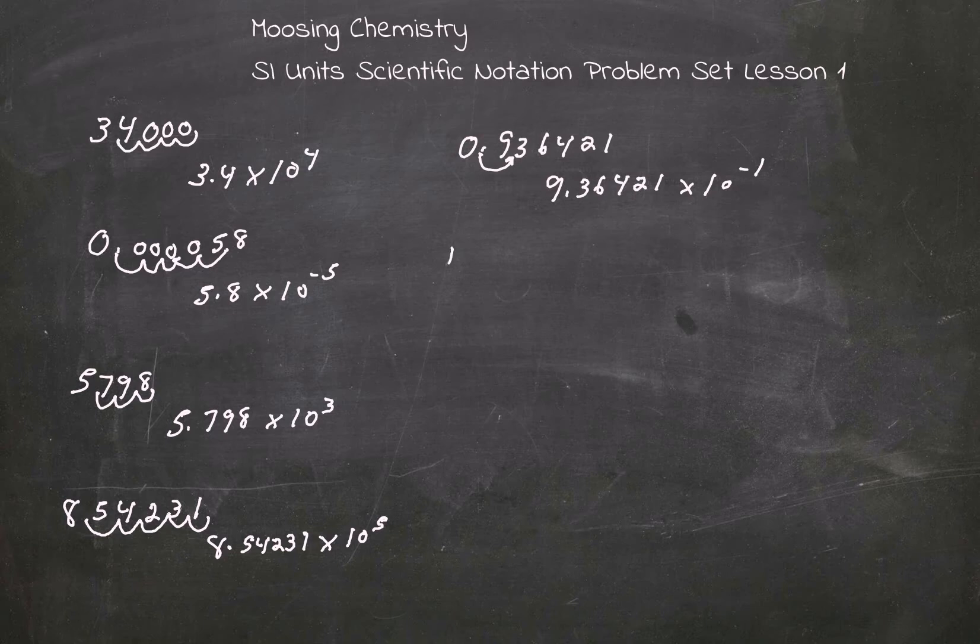Okay, let's try this number. 12, 0, 0, 0, 0, 0. So we go 1, 2, 3, 4, 5, 6. 1.2 times 10 to the 6th.